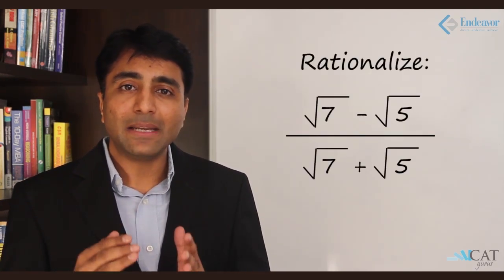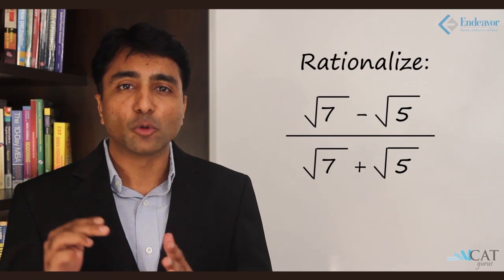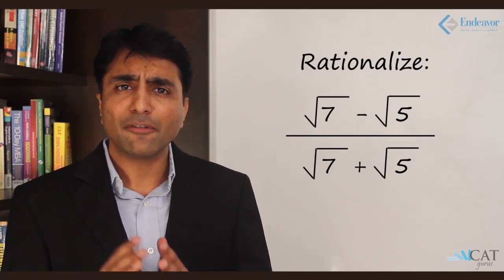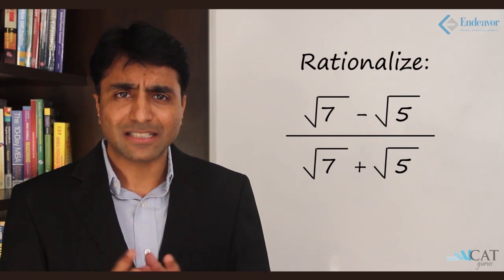Let us look at the next question. The third type of question is rationalization. Now, this is very common and this will be a part of some question. If we look at an example, we have root of 7 minus root of 5 the whole upon root of 7 plus root of 5. A very common question on rationalization.